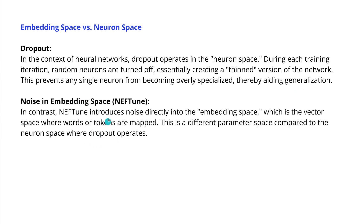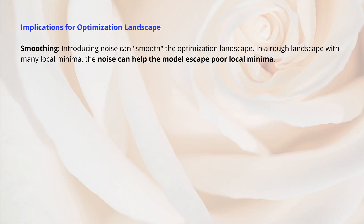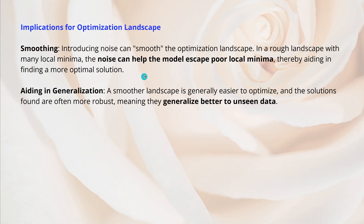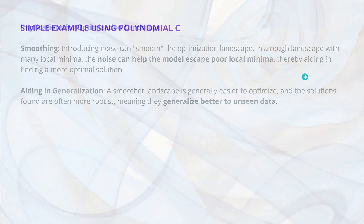With NEFT, we introduce additional noise into the embedding space — the vector space where words or tokens are mapped — which is a different parameter space compared to the neuron space where dropout operates. There is some smoothing happening: the noise can help our LLM model escape poor local minima. If you know about backpropagation, you understand exactly what this means. This helps the model generalize better to unseen data.